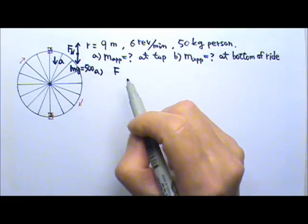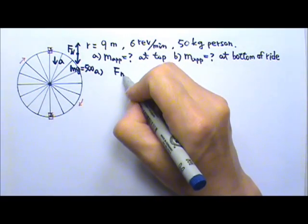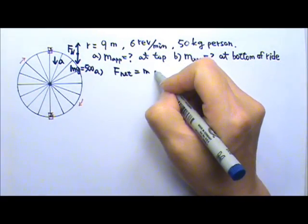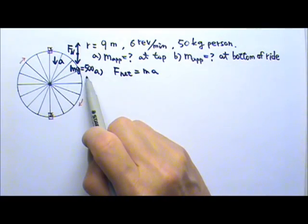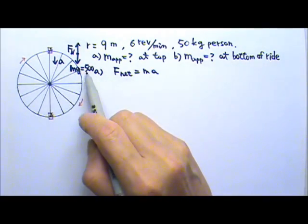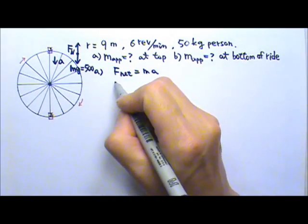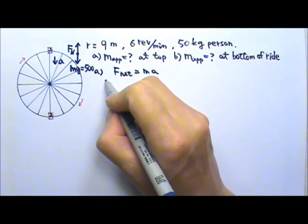That's it. The person is not touching anything else. So we can write the net force equals to Ma. Since the acceleration goes down, that means the downward force is bigger. 500 is more than the normal force.